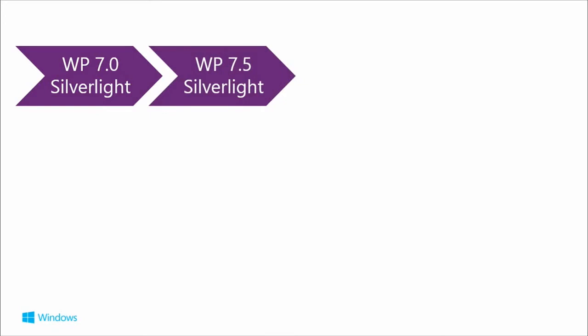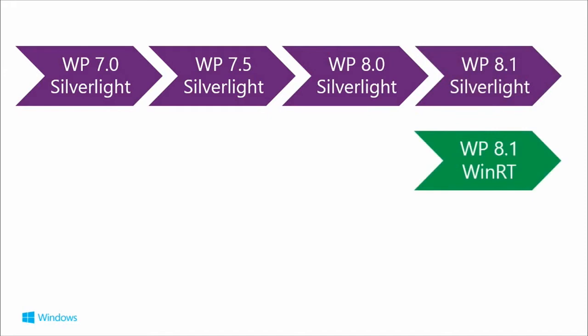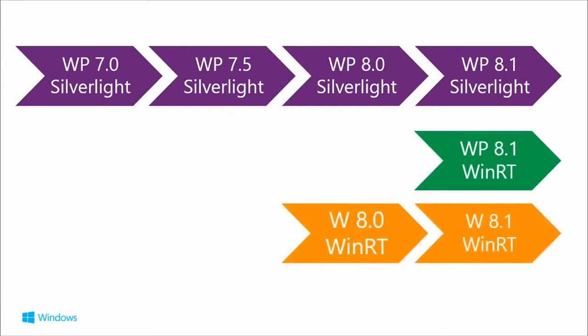We started back with Windows Phone 7.0 when Silverlight came as the XAML app technology — not the same as the browser plug-in, but the same XAML used to create native apps. We added more APIs in Windows Phone 7.5, then Windows Phone 8 — all still Silverlight XAML. Windows Phone 8.1 is where we get choices: Windows Runtime XAML was brought down from big Windows and is now available for Windows Phone. Adopting it lets you build universal apps sharing loads of code between Windows and Windows Phone. Windows Runtime XAML on big Windows came in with Windows 8.0 and was upgraded in Windows 8.1.